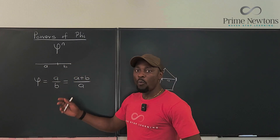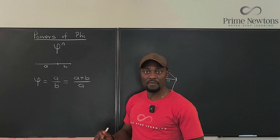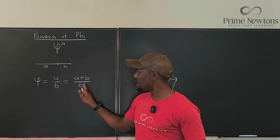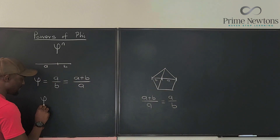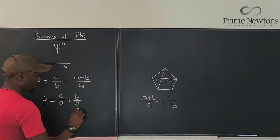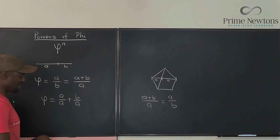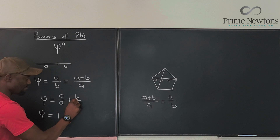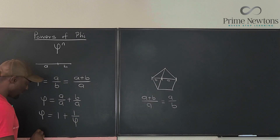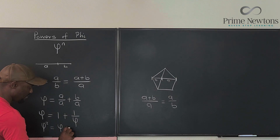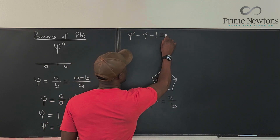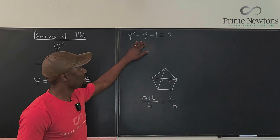Now, what is the actual number we obtain? Let's do the math. We can call this ratio phi. We can split a plus b over a into a over a plus b over a, which is 1 plus the reciprocal of phi — that is, 1 over phi. So phi equals 1 plus 1 over phi. Multiplying both sides by phi gives phi squared equals phi plus one. Collecting every term to the left-hand side: phi squared minus phi minus one equals zero.